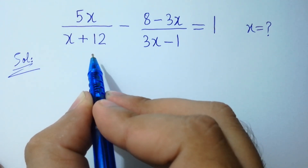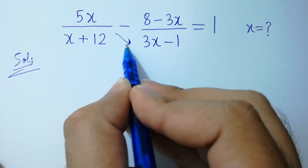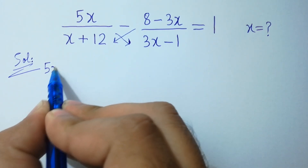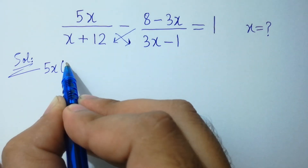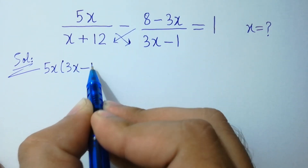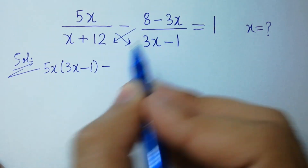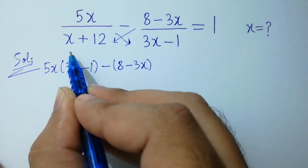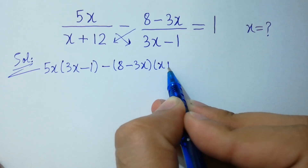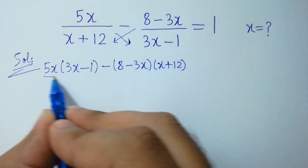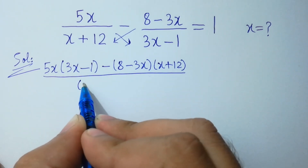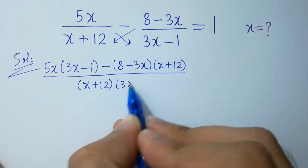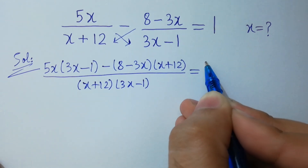By cross multiplication: 5x(3x minus 1) minus (8 minus 3x)(x plus 12), all over (x plus 12)(3x minus 1), equals 1.